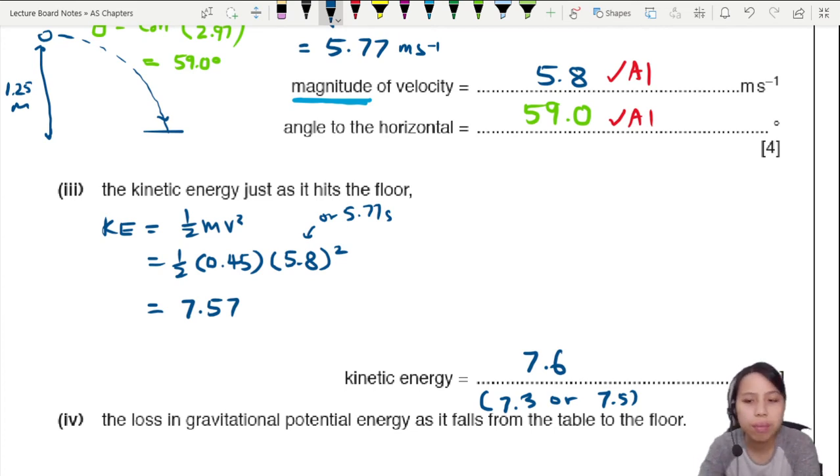It's okay if you use 5.77 and you get different values like 7.3 or 7.5. These are the accepted values also. The mark scheme will use, I think, 5.8. So one mark is for final answer. And one mark is, oh, did you know half MV squared is an equation? We'll learn more about this in the energy chapter as well. But we can remember a bit from your previous school. Half MV squared is kinetic energy.